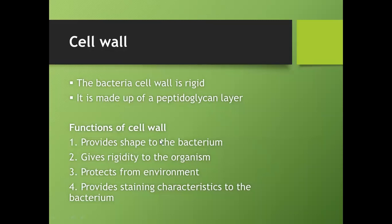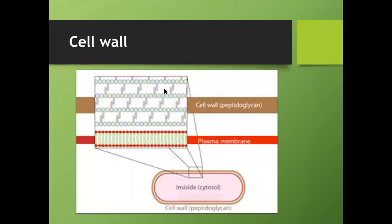The bacterial cell wall is very rigid, and its rigidity comes from its mesh-like formation. Its main function is to provide shape and rigidity, giving the bacterium protection from the environment — whether the external environment, other cells, or fluids within the body. Bacteria also have staining characteristics. Based on how thick the peptidoglycan layer is, you can differentiate bacteria by staining — this is called Gram staining, and we'll talk much more about it. The cell wall is made up of a peptidoglycan layer, visible here as mesh-like works, making it very strong.